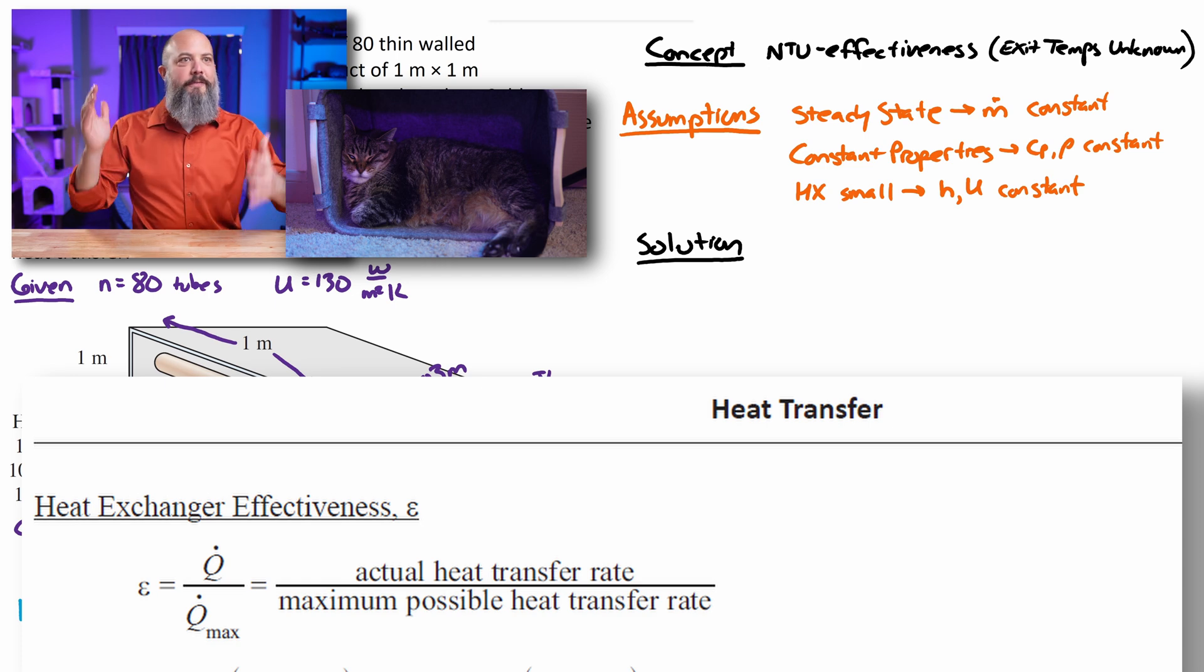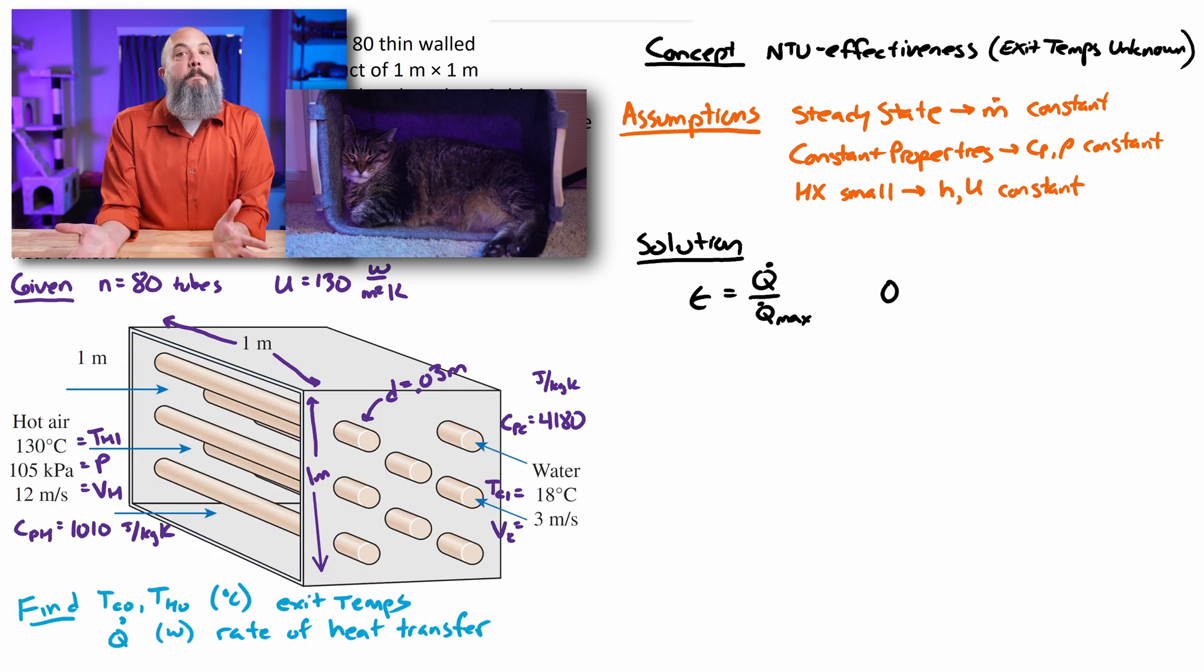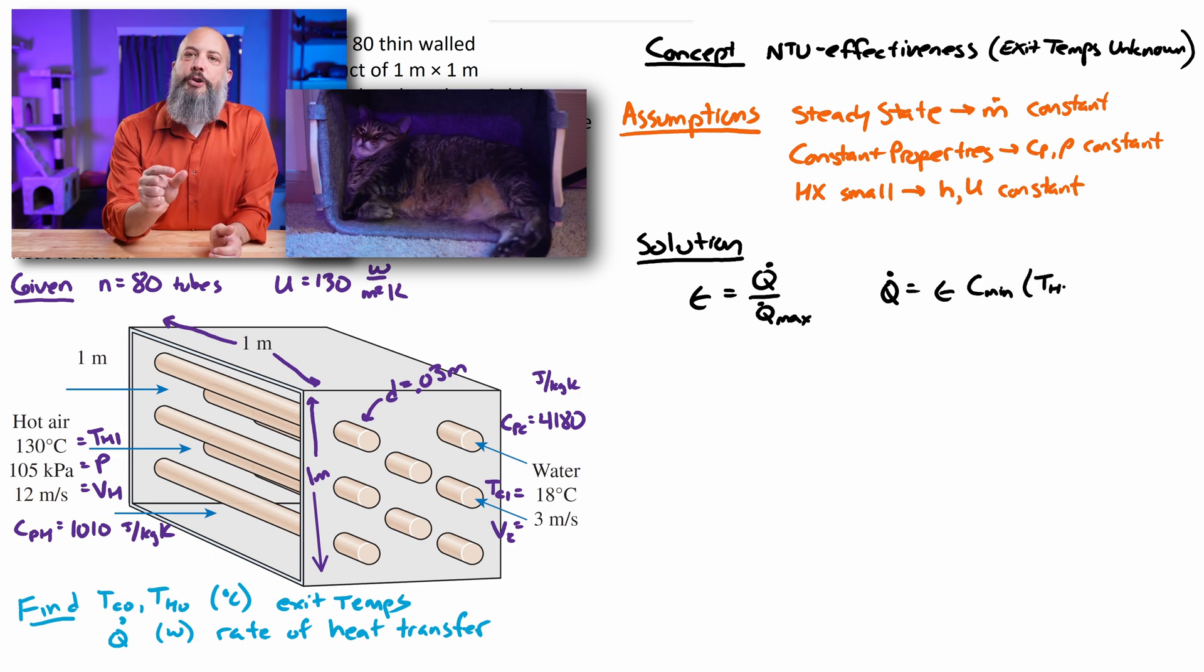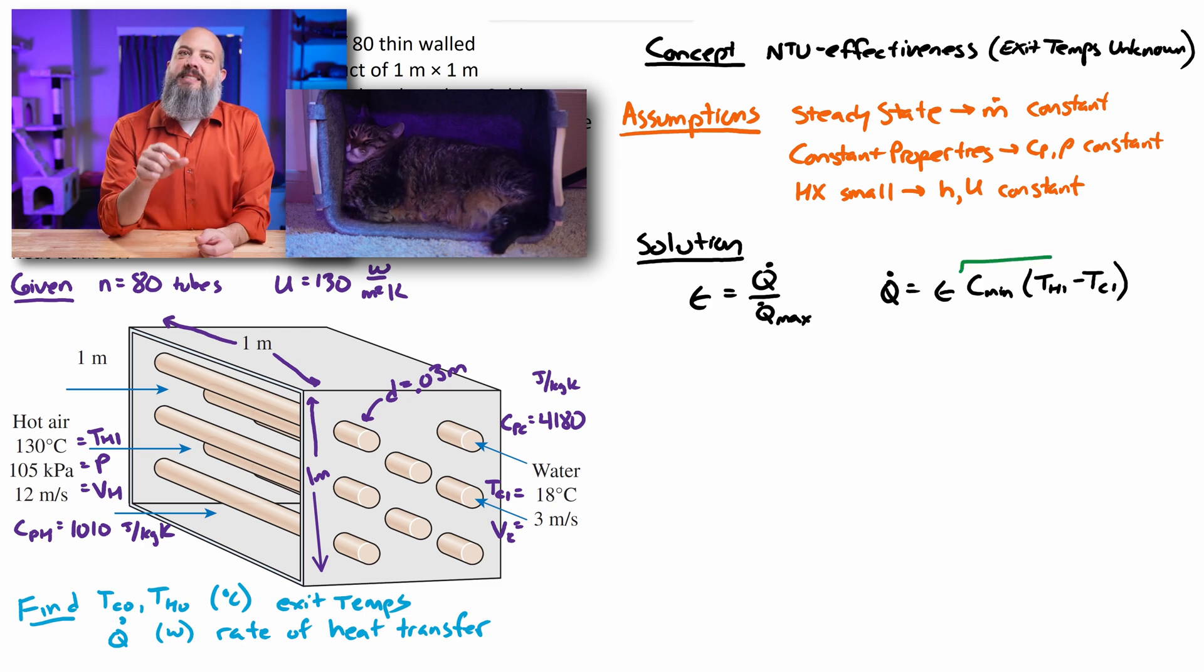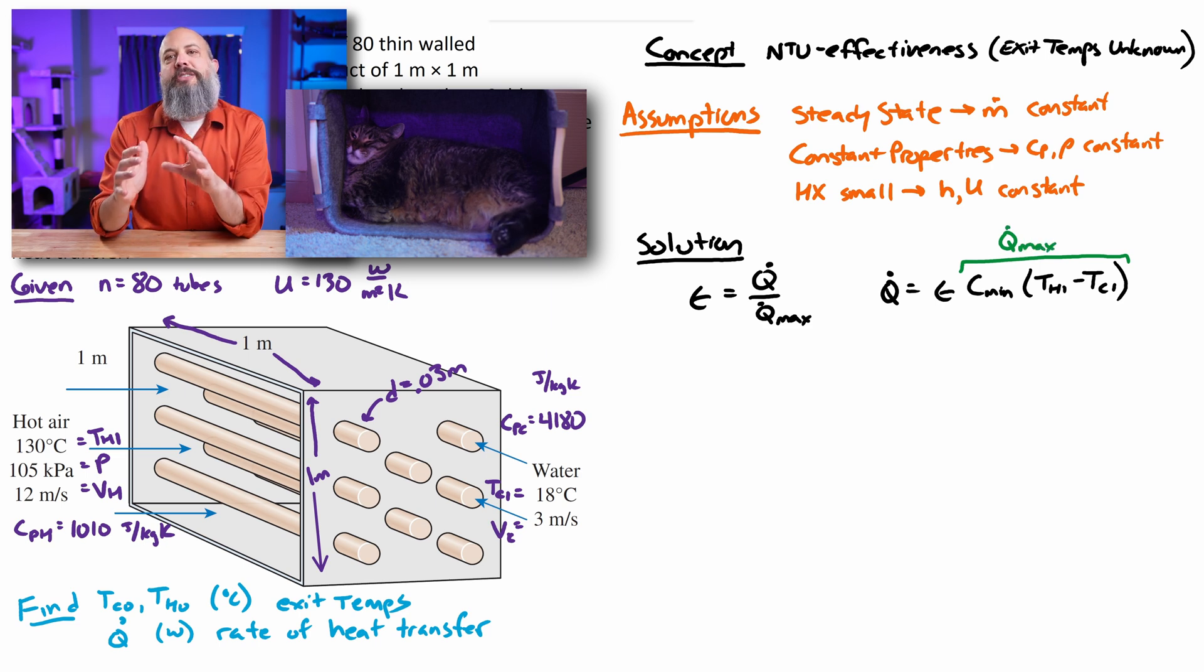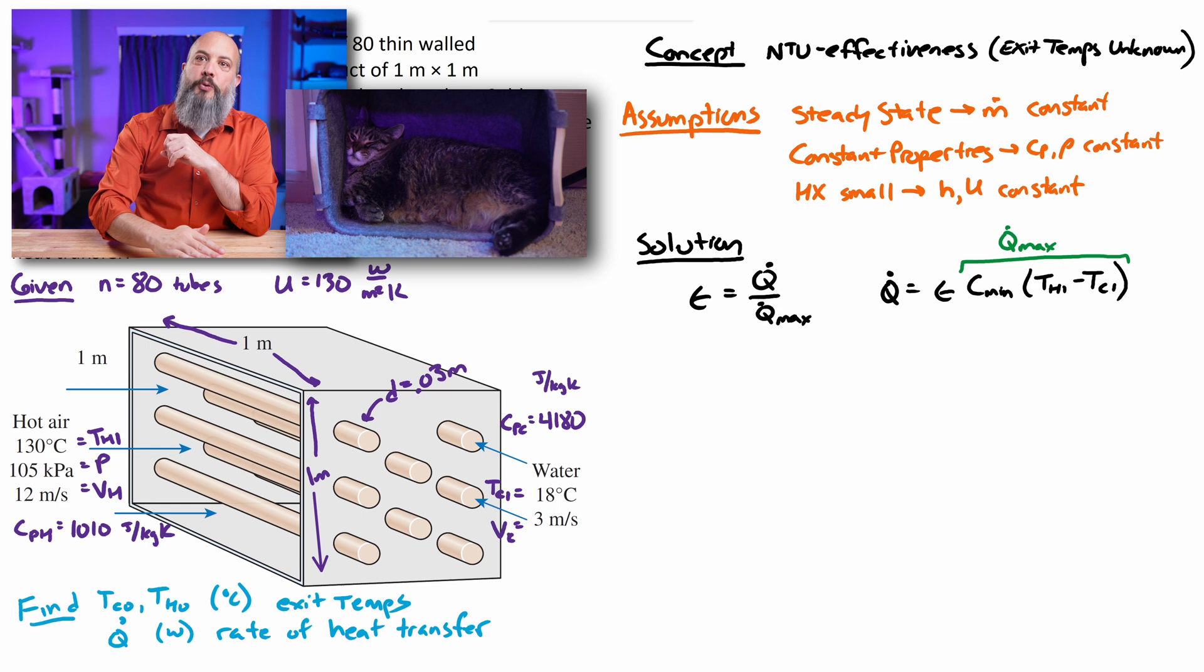So I'll start off with the FE reference manual, just the equation right at the top for effectiveness. Q dot over Q dot max, that's equal to the effectiveness. And Q dot max is not listed in the FE reference manual, but you can find it in any textbook. It's the minimum value for capital C, the heat transfer rate times T hot in minus T cold in.